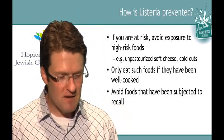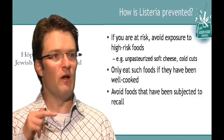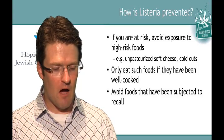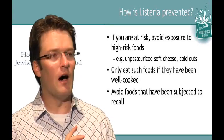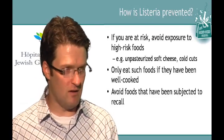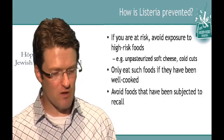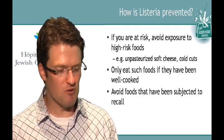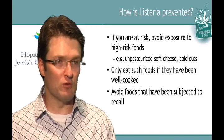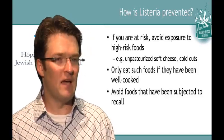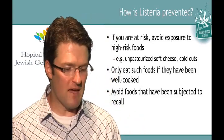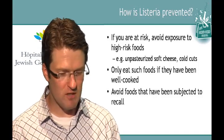How can you prevent Listeria? High risk exposures include raw fruits and vegetables like pre-bagged salad, uncooked or undercooked meats, unpasteurized milk and products made from it — regretfully, raw cheeses here in Quebec are certainly one possible risk factor. If you're at risk for invasive disease from Listeria, you're probably best off avoiding those high-risk foods. If you are going to eat those foods, only eat them if they've been well cooked. For example, with cold cuts, you can toss them in a frying pan until they're nice and hot, and then let them cool off — you've at least killed any Listeria. Pay attention to recalls and throw out any recalled food.